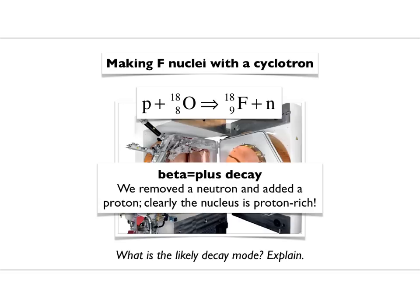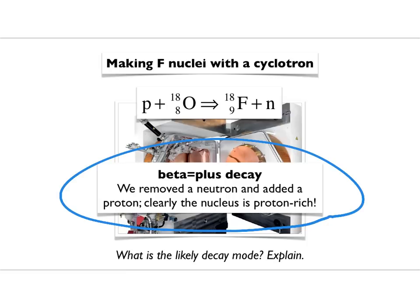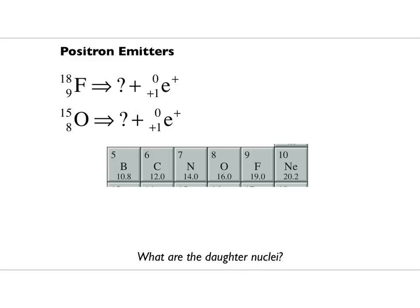So here it is: you have beta plus decay from a nucleus made by removing a neutron and adding a proton — that nucleus is proton-rich and will decay by emitting a positron. There are a couple of positron emitters used in medicine: fluorine-18 and oxygen-15. For each, I want you to tell me: what are the daughter nuclei? When fluorine-18 decays, when oxygen-15 decays — what does each decay into? Reason based on what you know about how nuclei work.